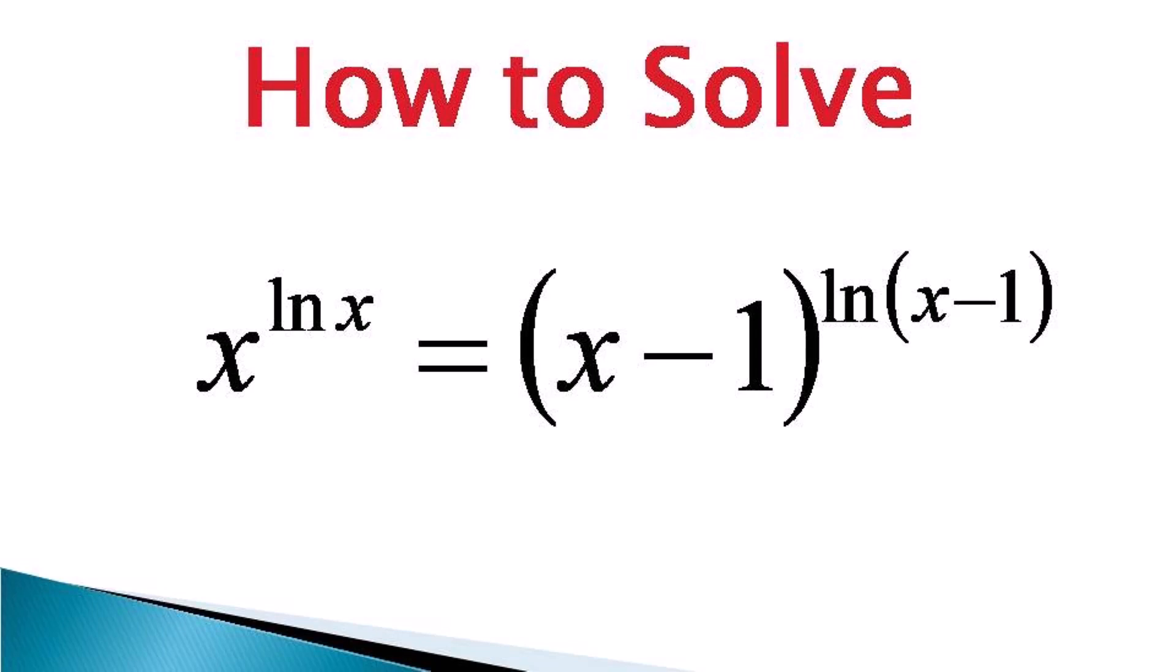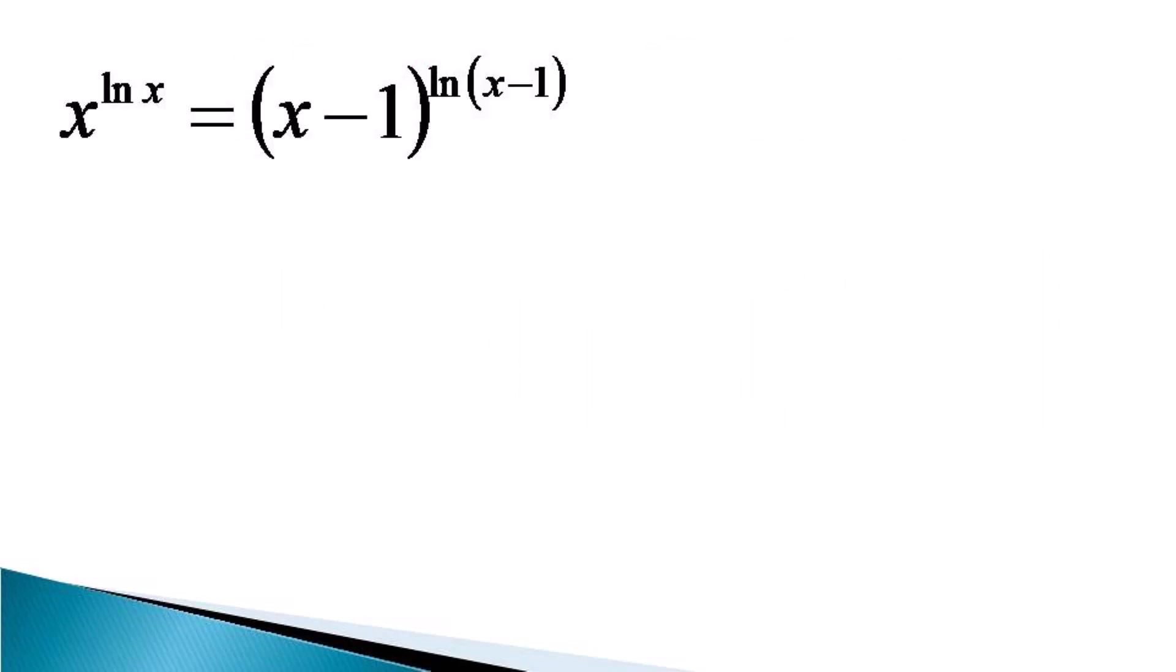Hello everyone. Here we have an interesting exponential equation with indices being logarithms. The equation is x raised to the power ln x equals x minus 1 raised to the power ln(x-1). Let's see how to solve it.